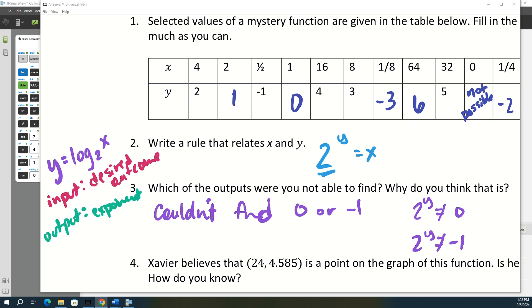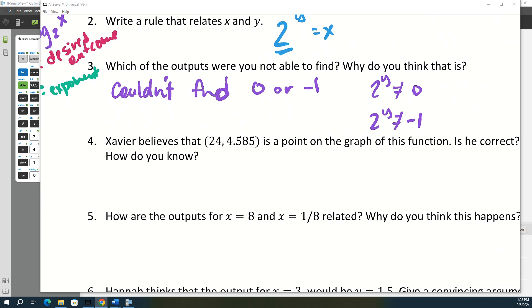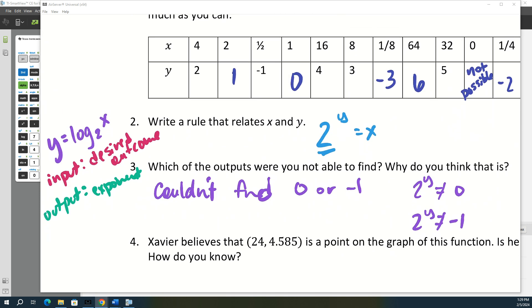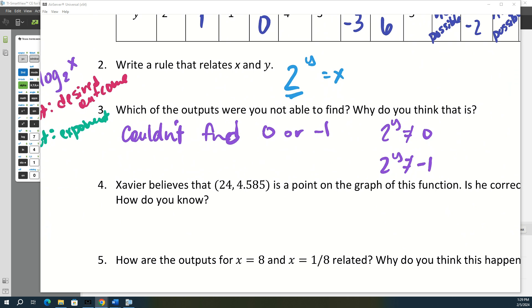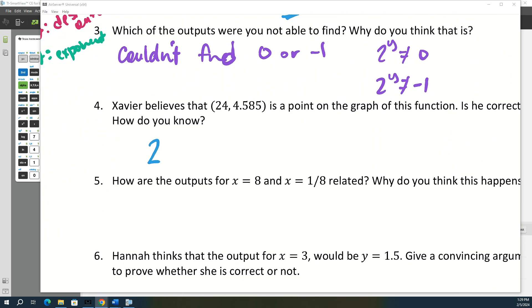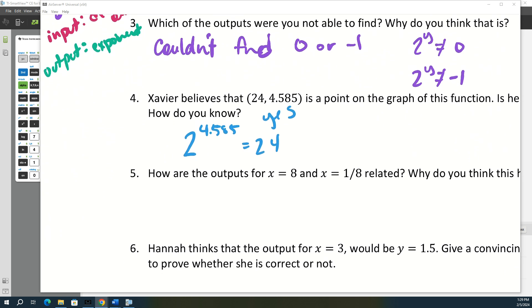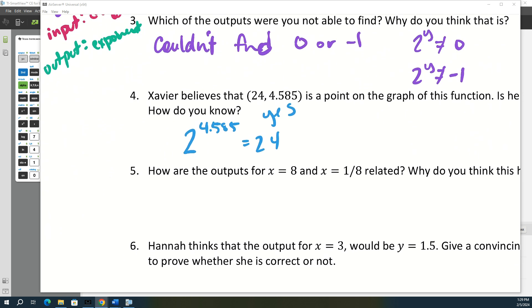So down here at number four, Xavier says that the point 24, 4.585 is on the graph of this function. Is he correct? So we could check it in our logarithmic function, or we could just go ahead and check it in the 2 to the y. So you would check to see if 2 to the 4.585 is equal to 24. What do y'all think? Pretty much. So we're gonna say yeah. We're gonna say yes because it does check out. 2 to the y does equal that 24.